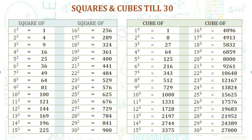18 cube 5832, 19 cube 6859, 20 cube 8000, 21 cube 9261, 22 cube 10648.